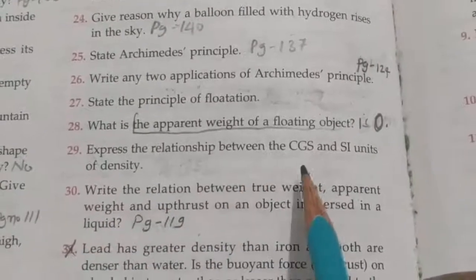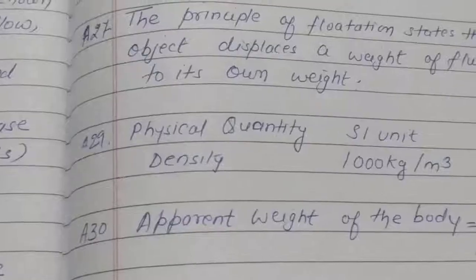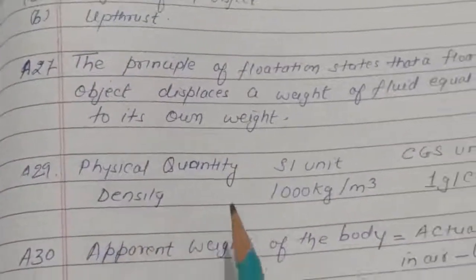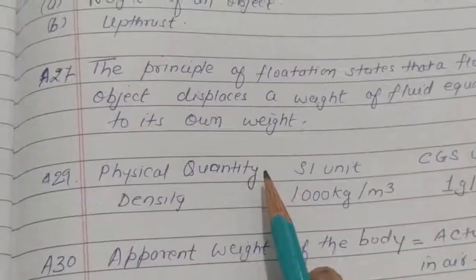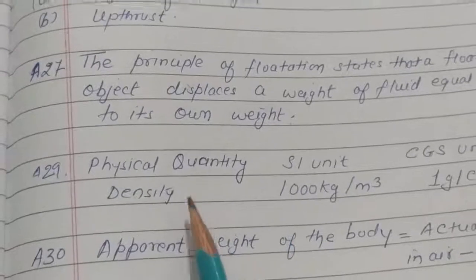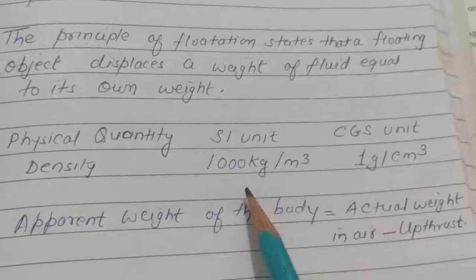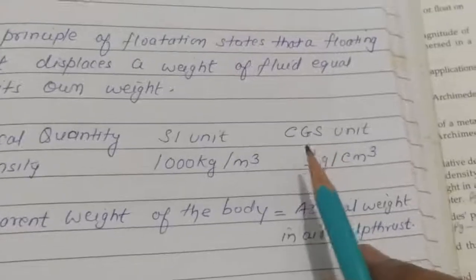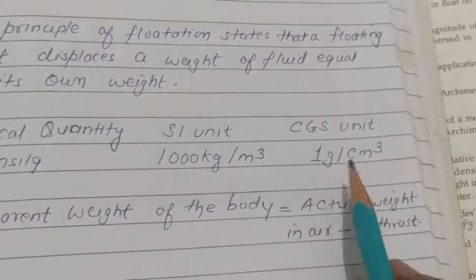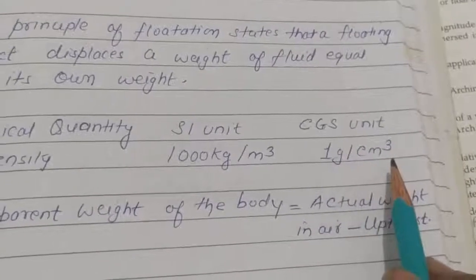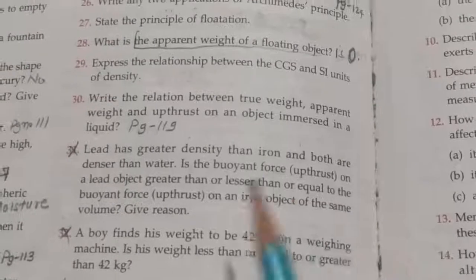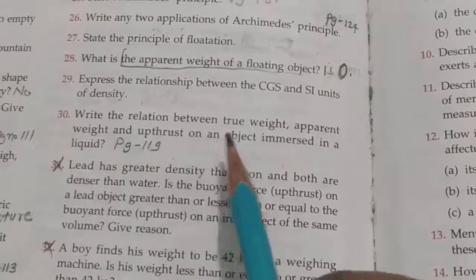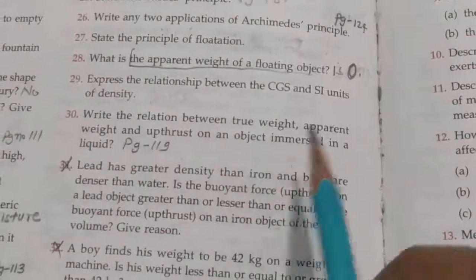Question number twenty-nine: express the relationship between the CGS and SI units of density. Write it as: the SI unit of density is 1000 kg per meter cube, and the CGS unit is 1 gram per centimeter cube.